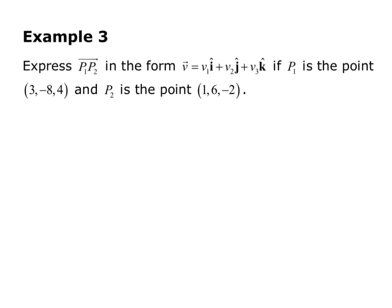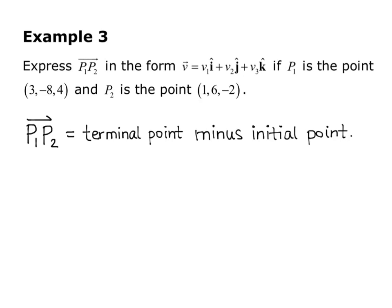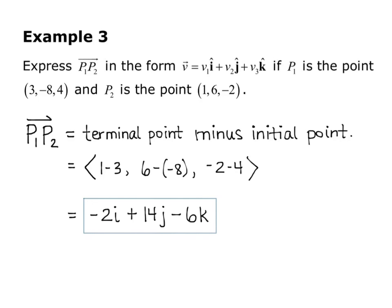Example 3 asks us to express vector P1P2 in the form V equals V1i plus V2j plus V3k, where P1 is the point (3, -8, 4) and P2 is the point (1, 6, -2). The first step is to find the vector: terminal minus initial gives x-component 1 minus 3, y-component 6 minus negative 8, z-component negative 2 minus 4. Simplifying, we get negative 2i plus 14j minus 6k.